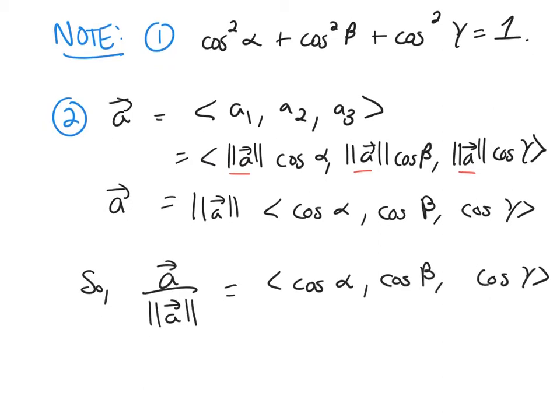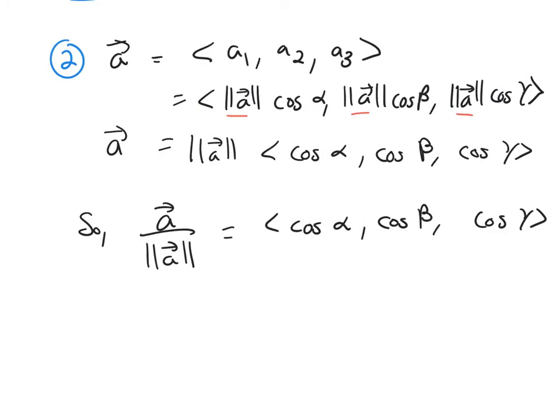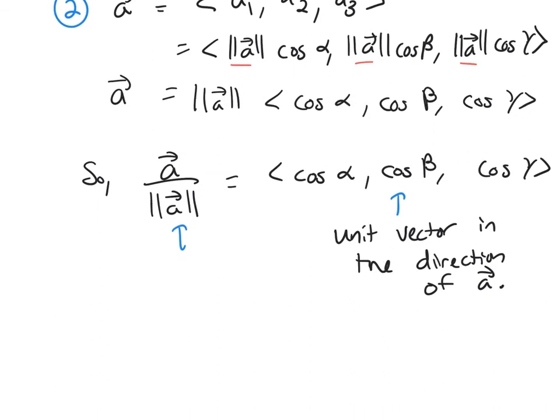If you remember, when you take a vector and divide by the magnitude, you get a unit vector in that same direction. So this vector right here with our direction cosines, this is a unit vector in the direction of A. So this gives us another way to find a unit vector in the direction of A.